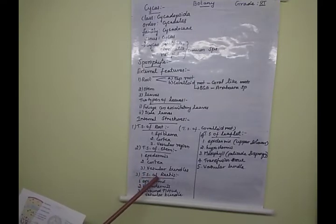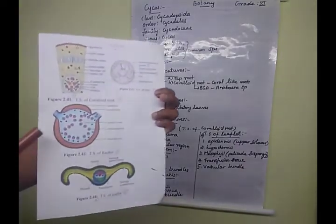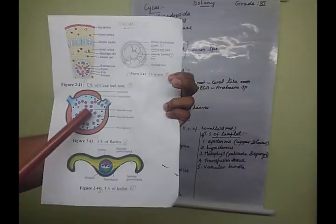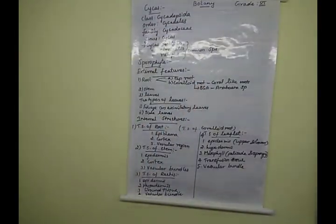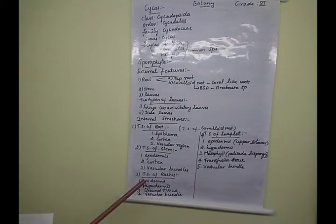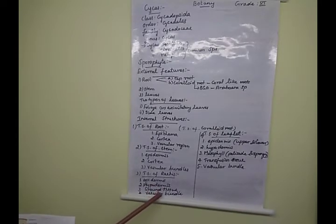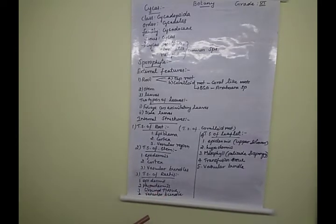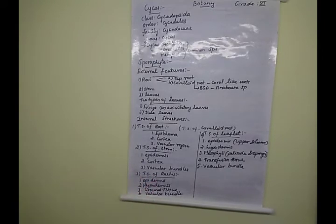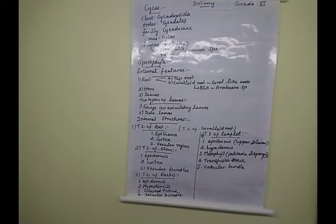The next one is the TS of rachis. This also shows four regions: epidermis, hypodermis, ground tissues, and vascular contents. Let us learn one by one.